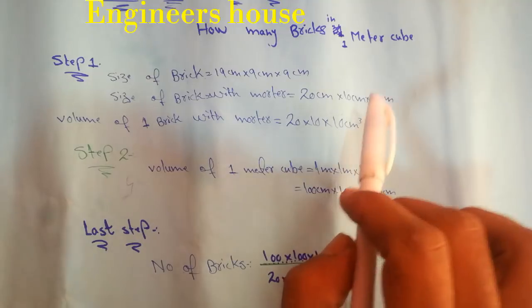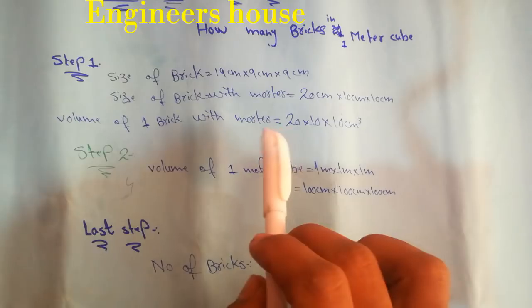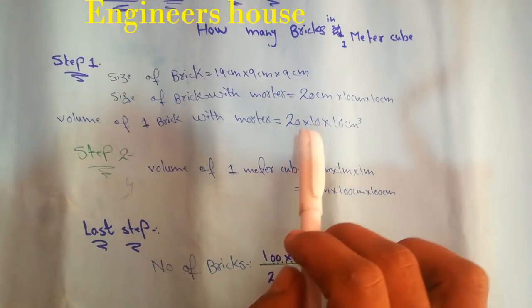Volume of one brick with mortar is equal to 20 by 10 by 10 cm cube.